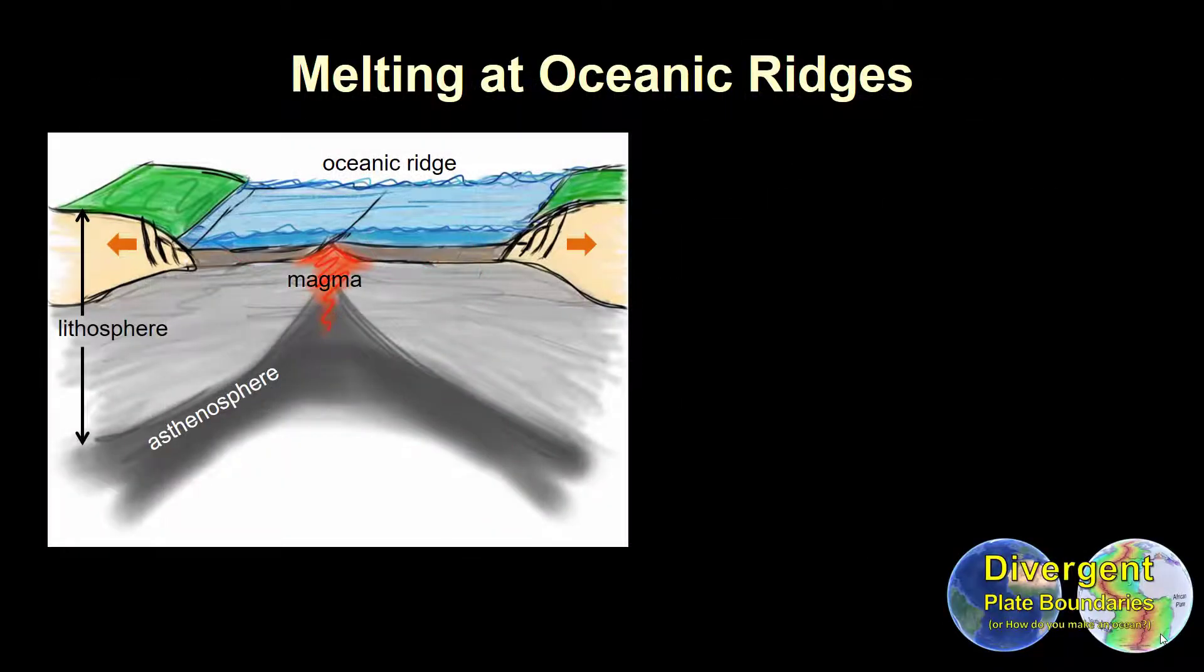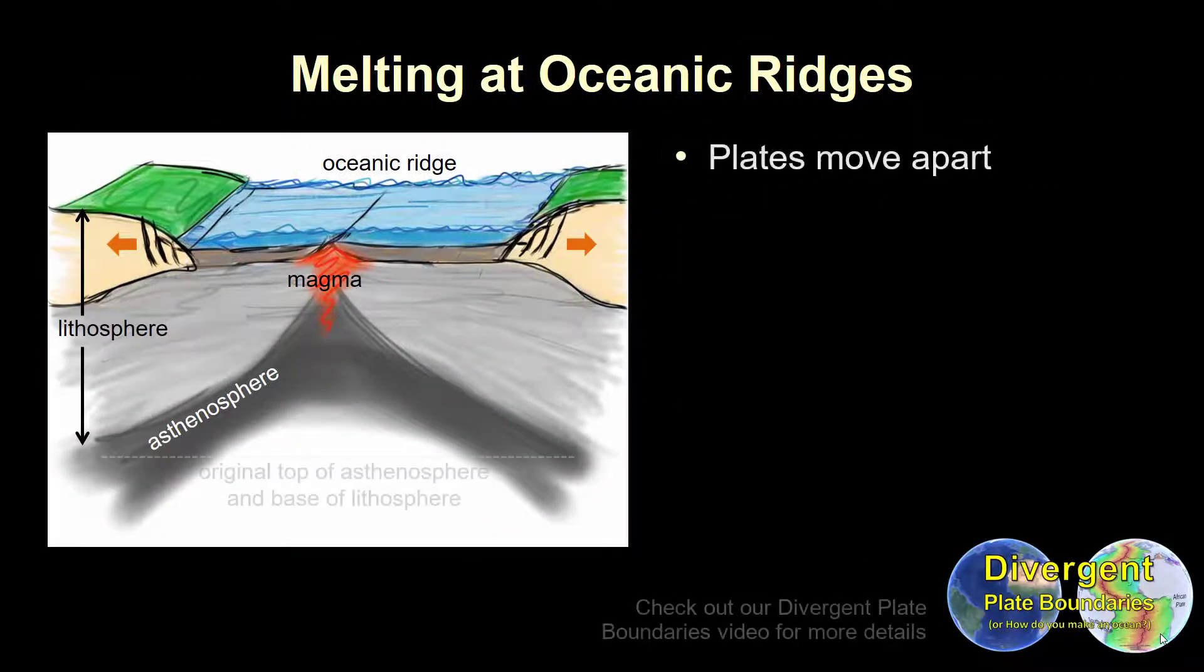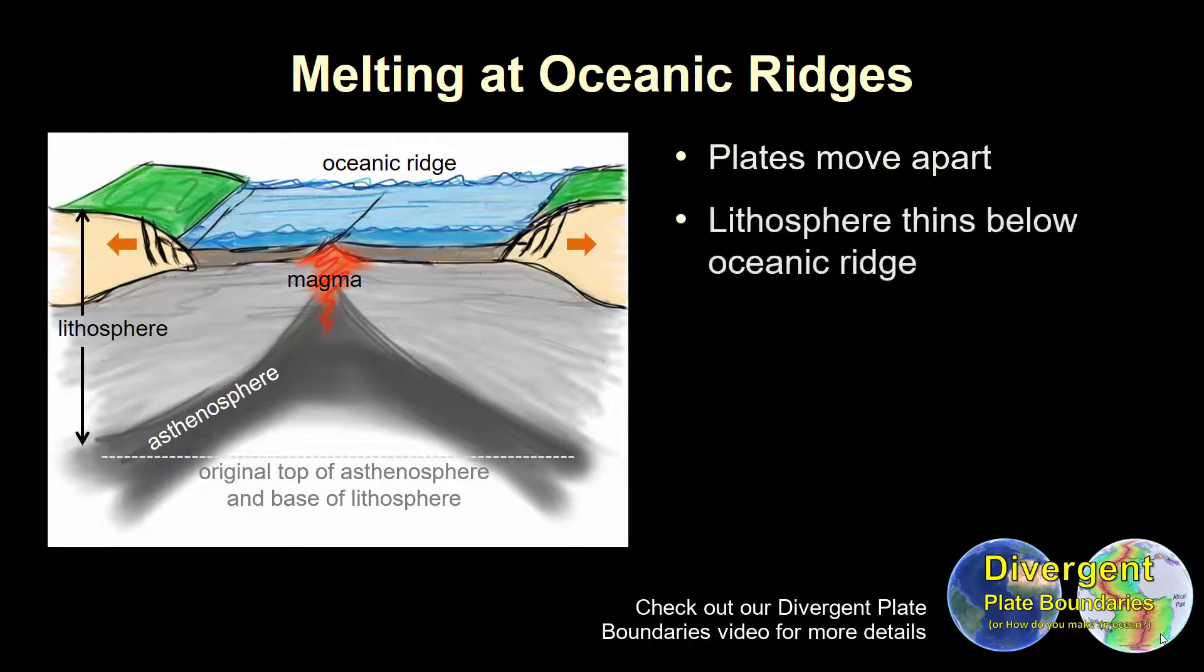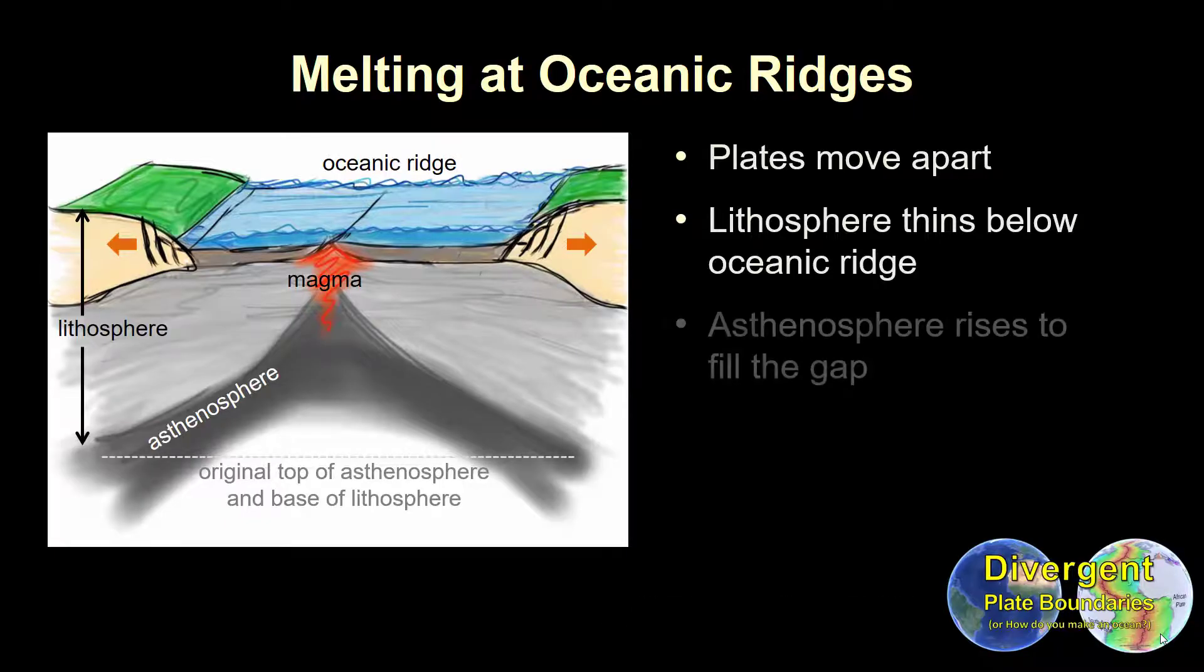First, let's remember what happens at divergent plate boundaries that are mostly represented by oceanic ridges. Plates move apart and the lithosphere is stretched and it thins. The hot rocks of the asthenosphere rise from deeper levels to fill this growing gap.